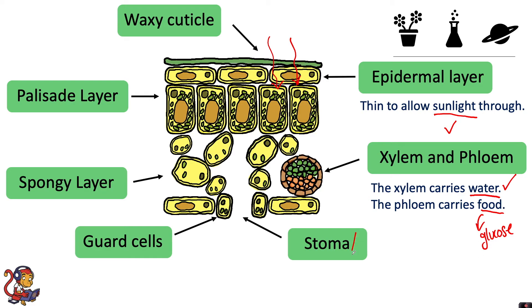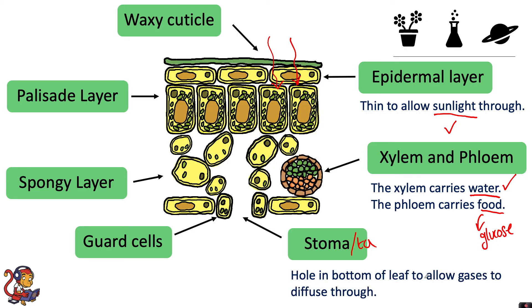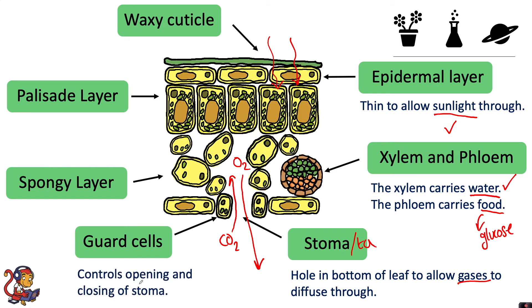The stoma, or stomata in plural, are the holes in the bottom of the leaf that allow gases to diffuse through. The gas needed in photosynthesis is carbon dioxide, so carbon dioxide diffuses from the air into the leaf. In photosynthesis, oxygen is made, so oxygen can diffuse out of the leaf through these stomata. The guard cells either side of the stomata control the opening and closing of the stomata.